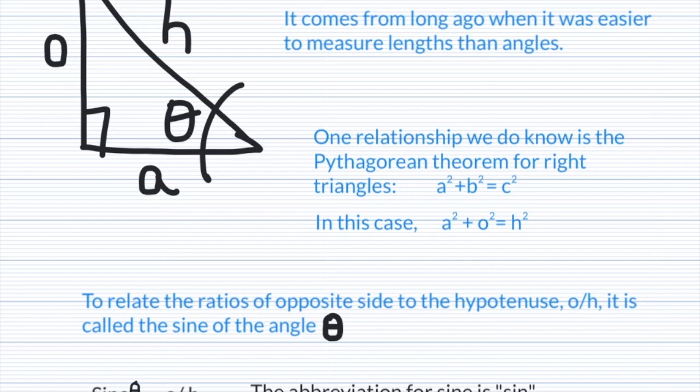The use of sines, cosines, and tangents comes from a long time ago when it was easier to measure lengths of triangle sides than it was to measure the angles of those triangles.